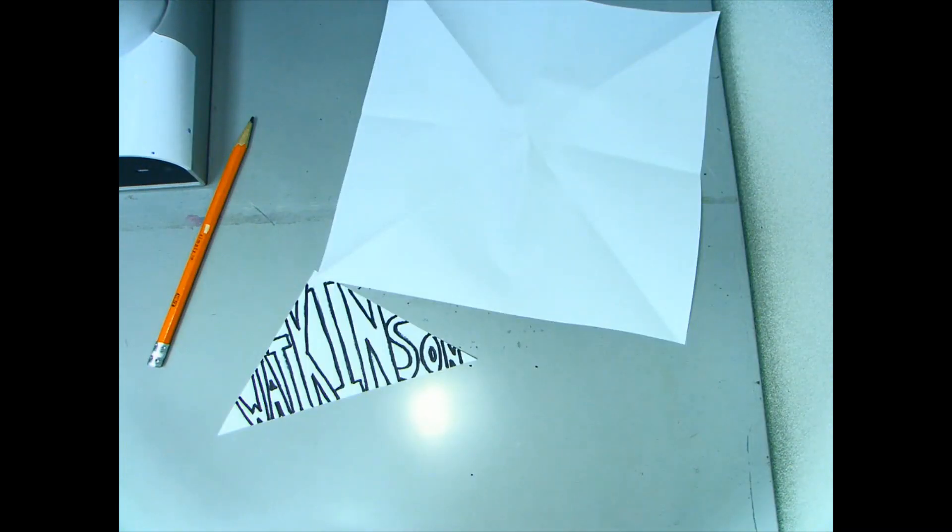Now comes the tricky part. Place your tracer under the triangle that's folded into your paper and carefully trace over it.